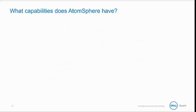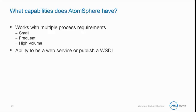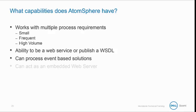Let's examine the capabilities AtomSphere has in regard to real-time integration. AtomSphere works with multiple process requirements — we can handle any combination of small, frequent, or high-volume executions. It also has the ability to be the web service itself or publish a WSDL. We use our web services connectors to fuel our event-based solutions, allowing users to trigger AtomSphere executions from outside the tool without the need for a schedule. AtomSphere can also act as an embedded web server for larger-scale SOA needs.